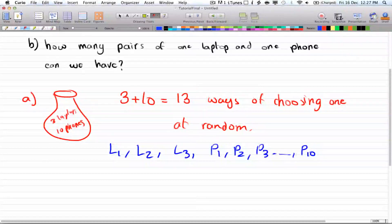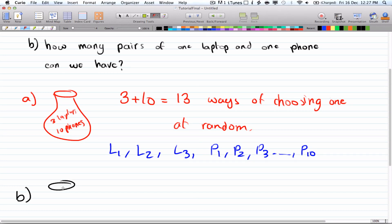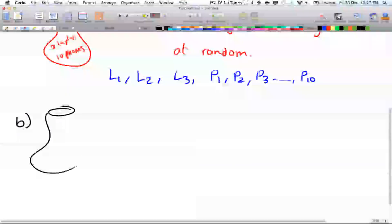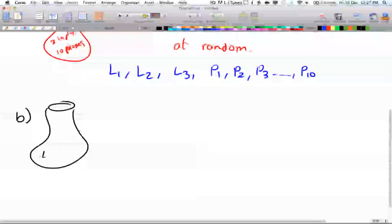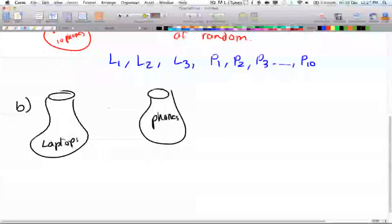And now for b, we have how many pairs of one laptop and one phone can we have. So in this case we have two bags, one that has laptops and this bag has phones. So we know that there are three laptops and there are ten phones.